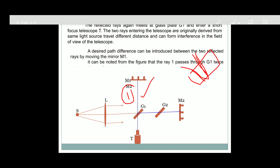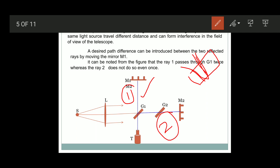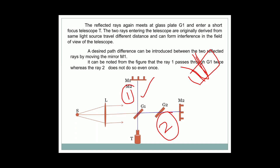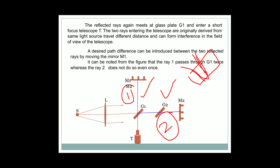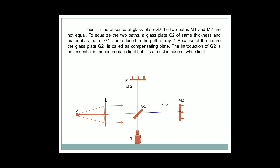The second reflected ray, towards mirror M2, does not travel through G1 at all. So these two rays travel the same physical distance but are not optically equal, because ray 1 travels through glass plate G1 twice while ray 2 does not pass through it even once. Therefore, the path difference is not equal, and we must use another glass plate G2 of the same thickness and same material as G1 — this is called the compensating plate. Now ray 2 also travels through glass plate G2 twice, making the two reflected rays optically equal. They travel different distances, came from the same source, and after interference produce bright and dark rings.